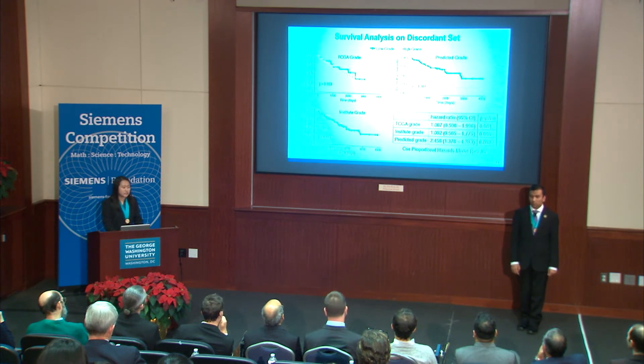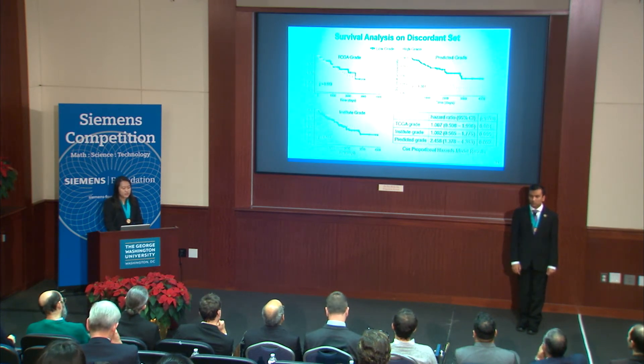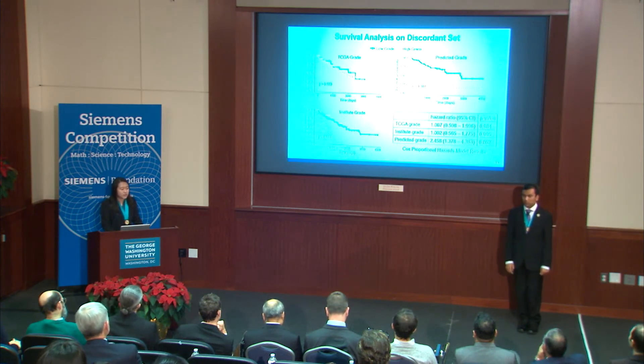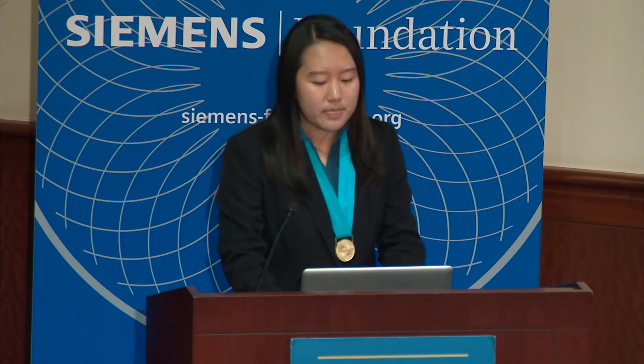The discordant set consisted of patients whose TCGA grade and institute grade conflicted — if a patient was classified as high-grade by TCGA, they would have been labeled as low-grade by our institute, and vice versa. The Kaplan-Meier curves for pathologists' given grade are virtually indistinguishable, lying right on top of each other, showing that the pathologists' given grade was not related to survival at all. On the other hand, our predicted grade successfully distinguished between high-grade and low-grade patient tumors, achieving a hazard ratio of 2.059 and a p-value of 0.001, even in cases where highly trained pathologists were not able to. Our predicted grade amazingly maintained the same performance as on the concordance set, showing it could help pathologists grade more challenging cases and improve diagnoses.